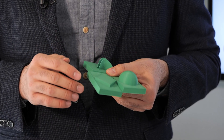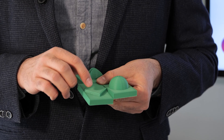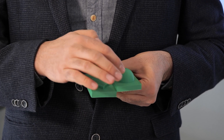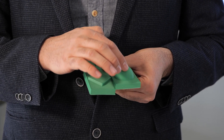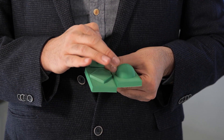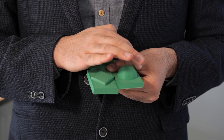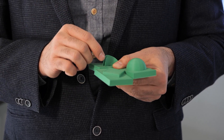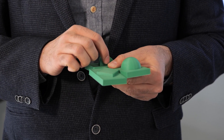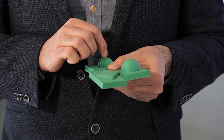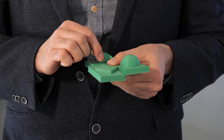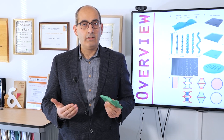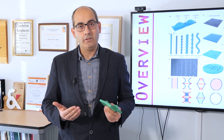A plate has two curvatures, both of them are zero, so all in all zero. A ball has two positive curvatures, which gives you a positive value for curvature. And a saddle has one positive and one negative curvature, and that would mean a negative total curvature.